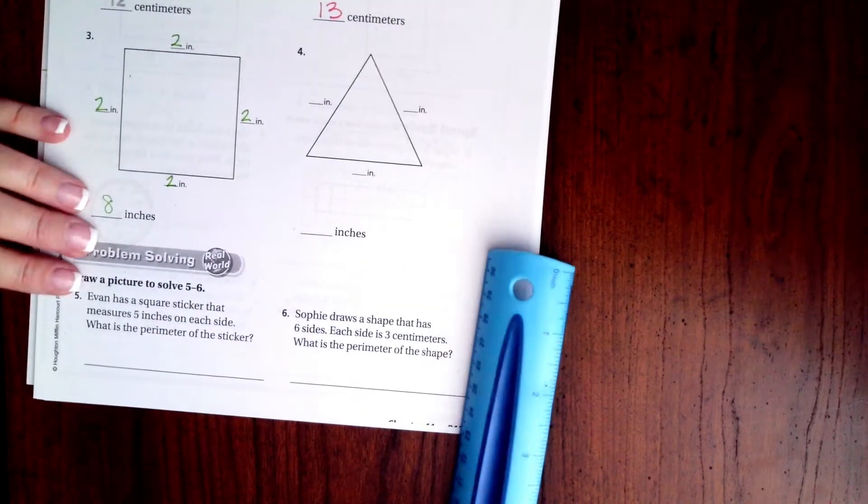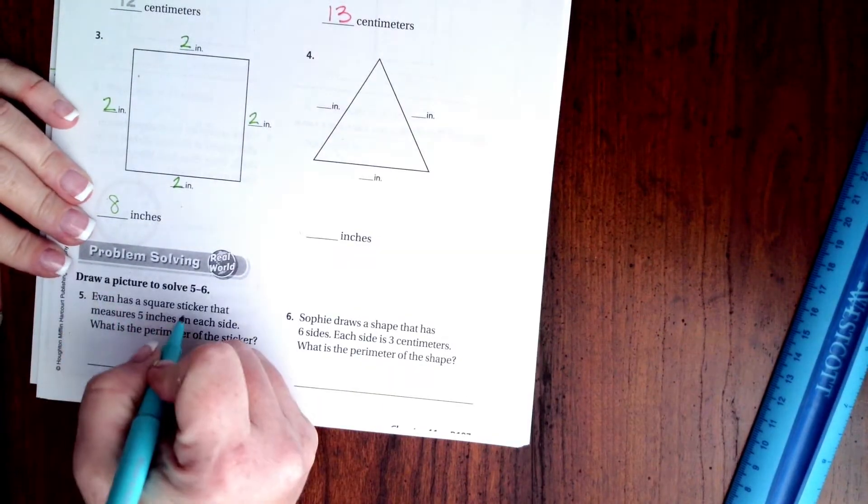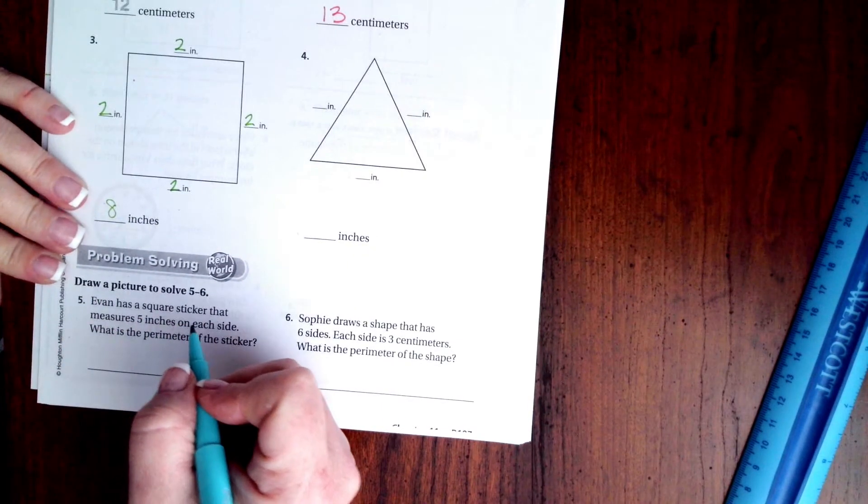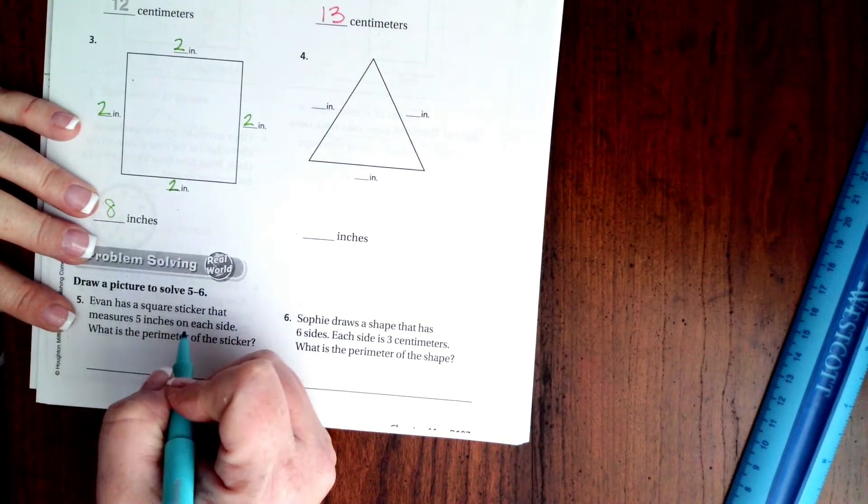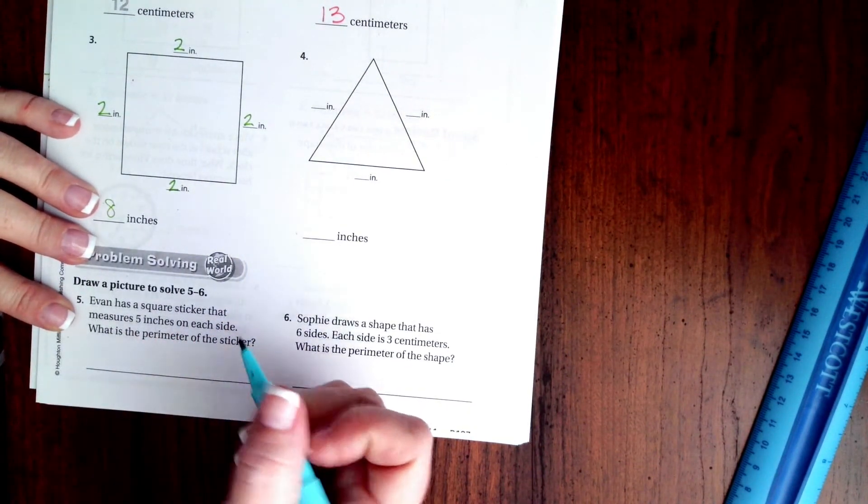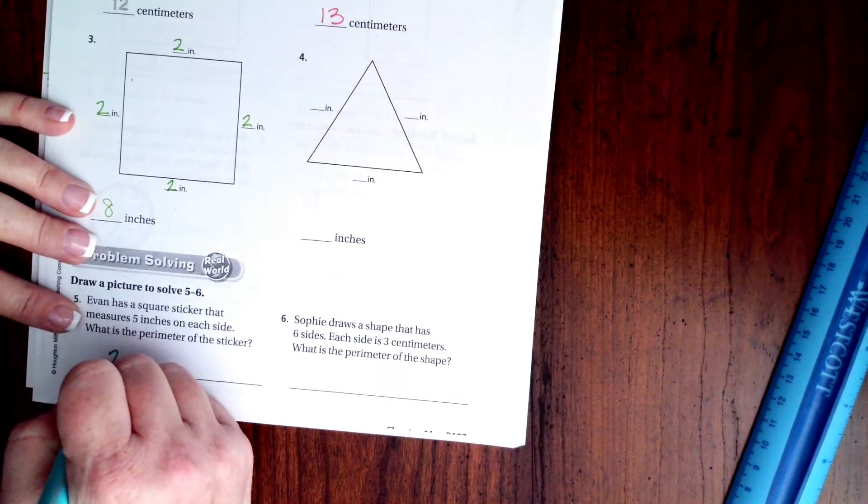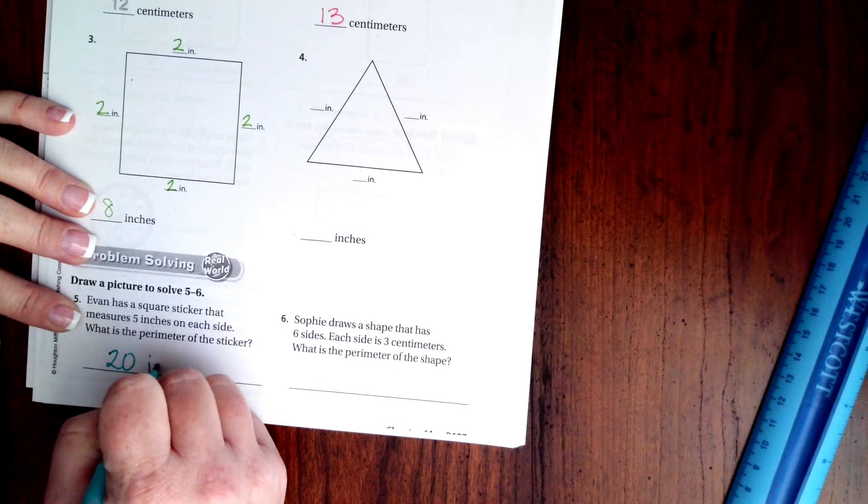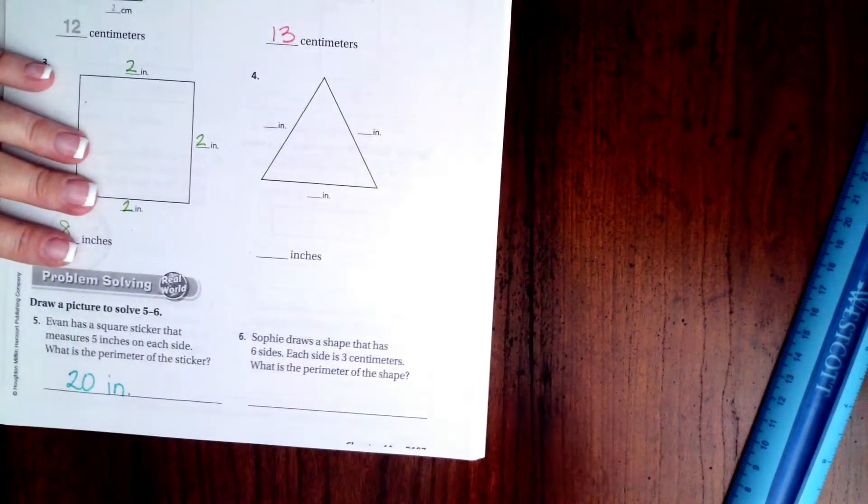We're going to go down and do number five. It says Evan has a square sticker, means all the sides are the same, that measures five inches on each side. What's the perimeter of the sticker? We'll count by five four times: five, ten, fifteen, twenty. Twenty inches, done!